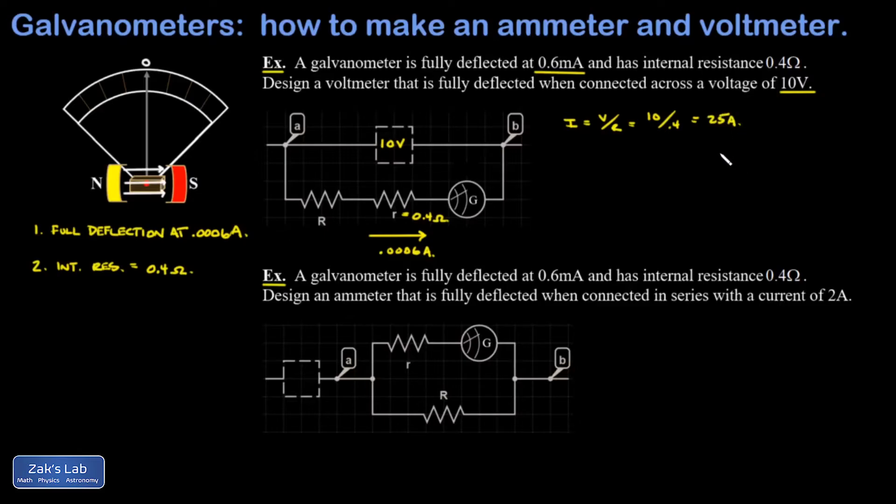So what we're going to do to prevent this and control the maximum current is put a resistor in series with the galvanometer, such that when we connect to a 10 volt potential difference, we end up with 0.0006 amps of current running through it.